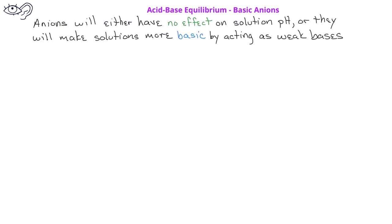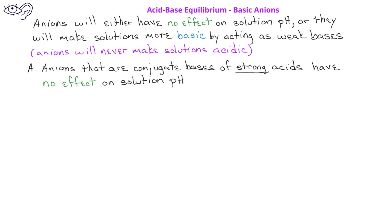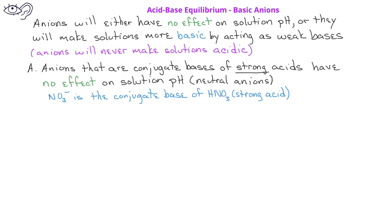Anions will either have no effect on solution pH or they will make solutions basic by acting as weak bases. Anions will never cause a solution to be acidic. There are two different kinds of anions to focus on. There are anions that are conjugate bases of strong acids, and these have no effect on solution pH — these would be called neutral anions. For example, the nitrate ion, NO₃⁻, is the conjugate base of nitric acid, HNO₃. We know that nitric acid is a strong acid, so the nitrate ion is a neutral anion.